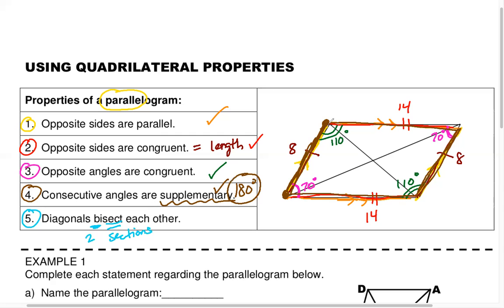The diagonals go from corner to opposite corner through the shape. This diagonal is in light blue and this one in dark blue. These things chop each other in half. From here to the intersection is the same length as from the intersection to the other end — I'll give those three tick marks. If this is nine centimeters, this would also have to be nine. The light blue diagonal also gets chopped in half, so whatever this length is, it's the same on the other side.